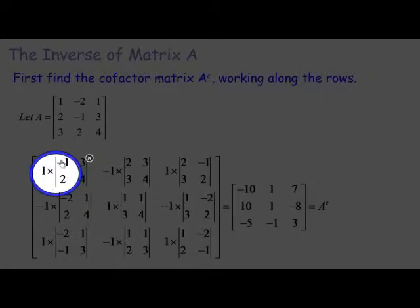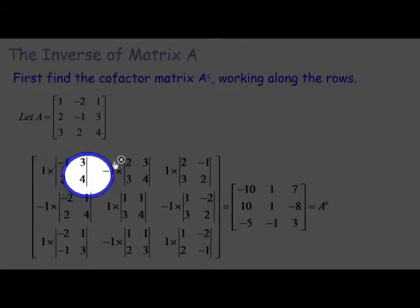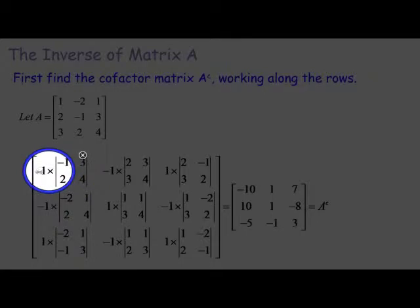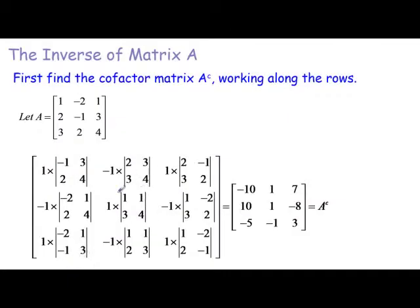The trouble with cofactors is there's an alternating sign pattern — plus, minus, plus — which goes down the matrix. The sign is minus one to the power i plus j, where i and j are the row and column indices. In the three-by-three case, you just alternate signs as you go around. After working through all the cofactors, the cofactor matrix is: minus 10, 10, minus 5 / 1, 1, minus 1 / 7, minus 8, 3.